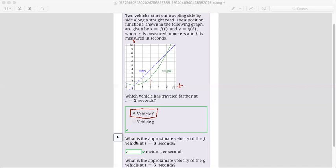The next question says what is the approximate velocity of the f vehicle at t equals three seconds. So when we're looking for velocity, we're looking for the slope of the distance versus time graph. Velocity is equal to distance over time. This is like the change in y over change in x kind of idea.